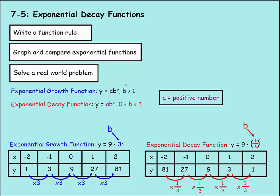Today we're going to work with exponential decay functions. It's going to be the same formula — y equals a times b to the x — but b is going to be between 0 and 1, usually in the form of fractions, and that's what's going to make them decay or get smaller.